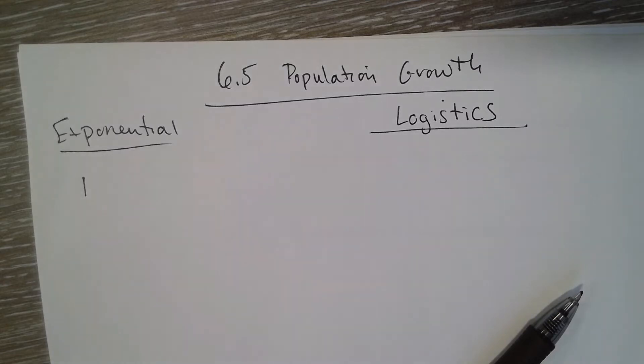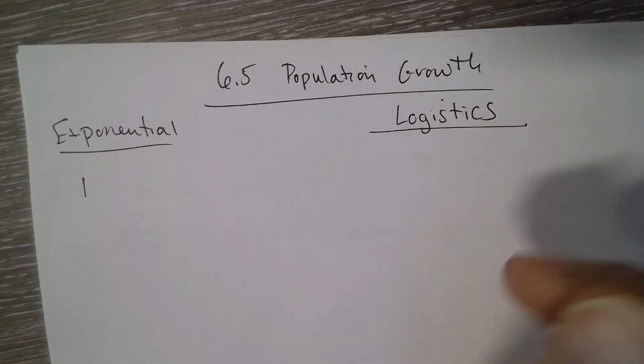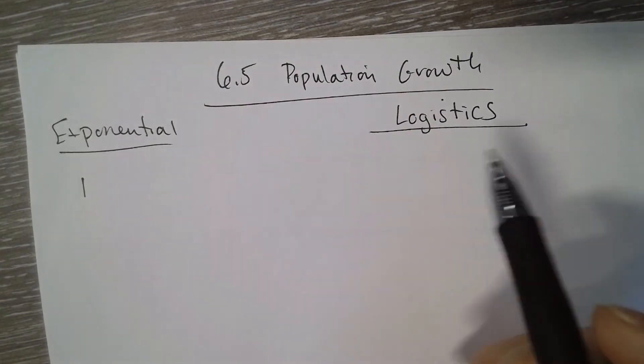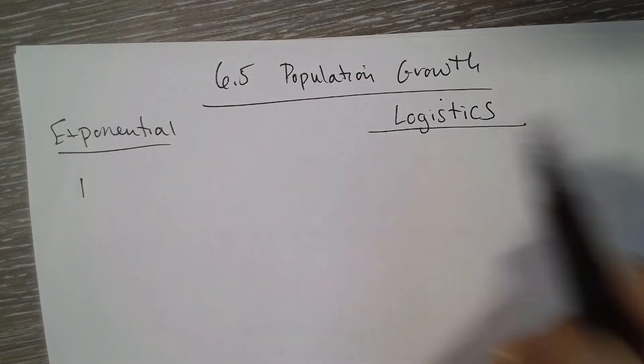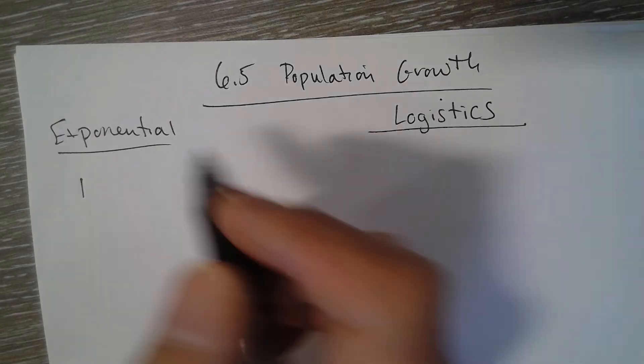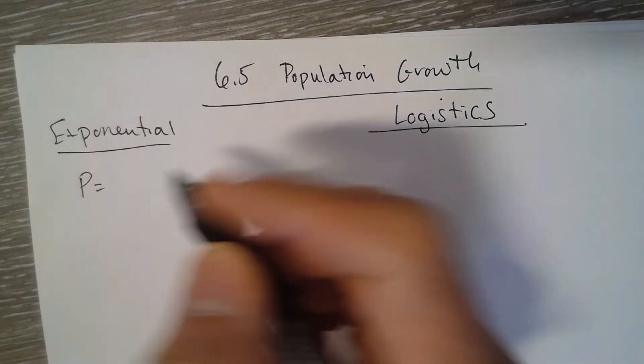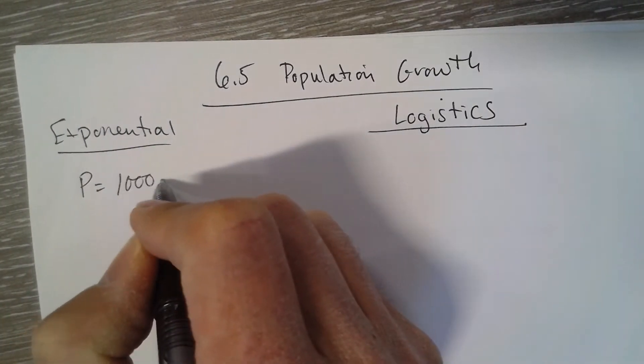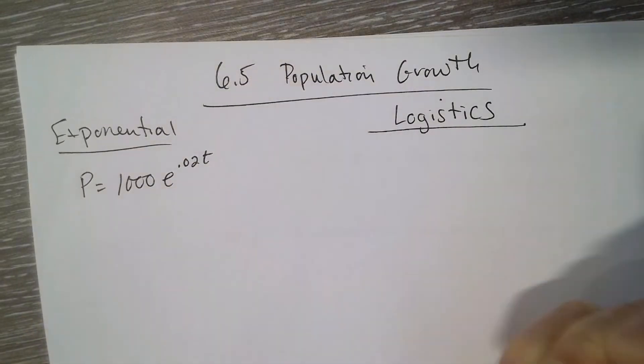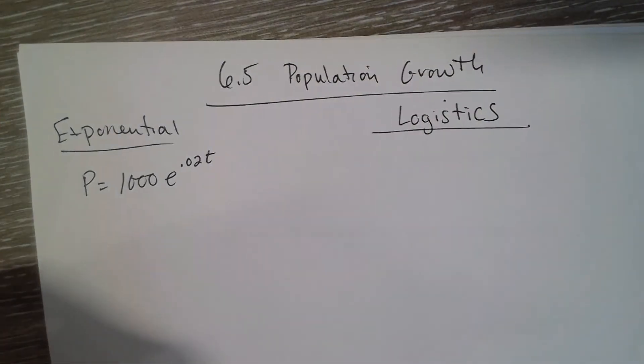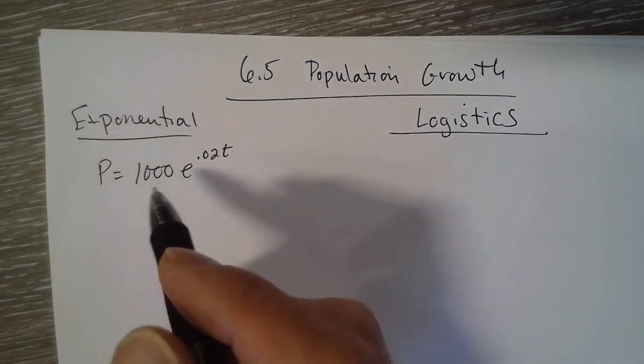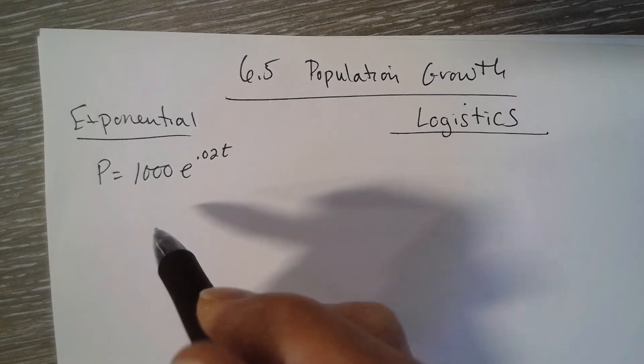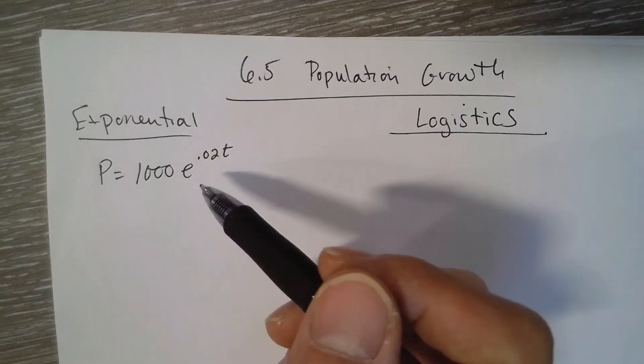Section 6.5 covers population growth. There are two types of growth: exponential growth and logistic growth. Exponential population might be P = 1000e^(0.02t), where P is population and t is time. That's the general or population equation for this one. If you wanted the differential equation for this scenario...